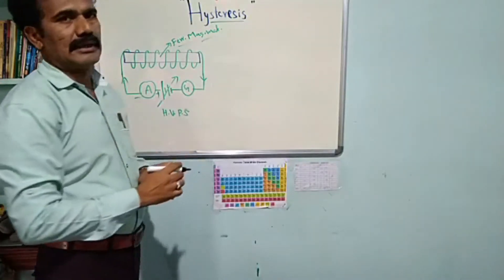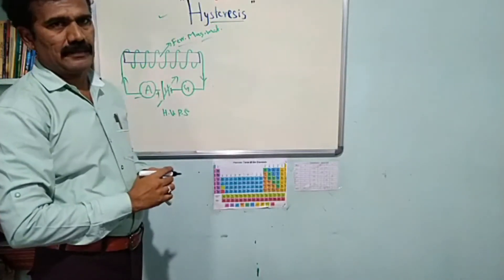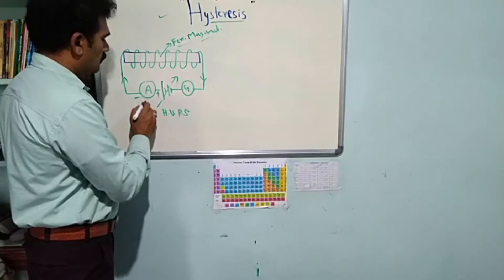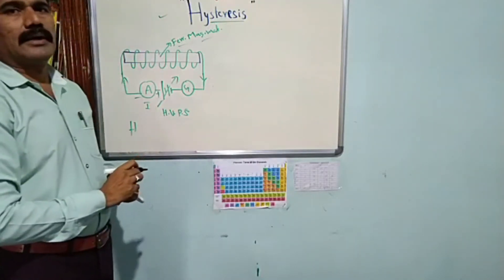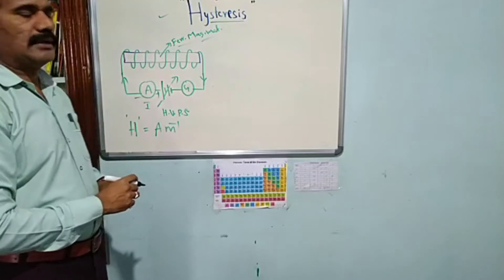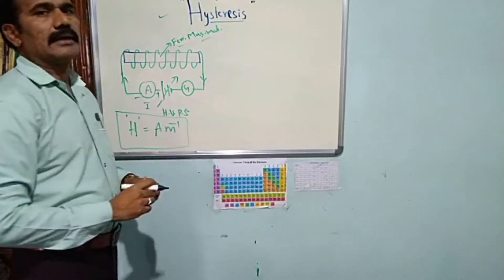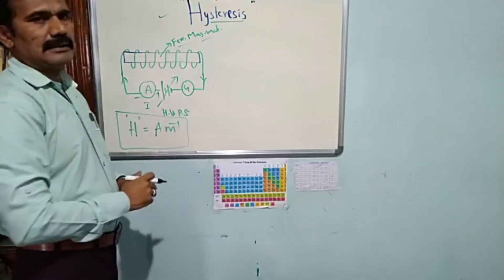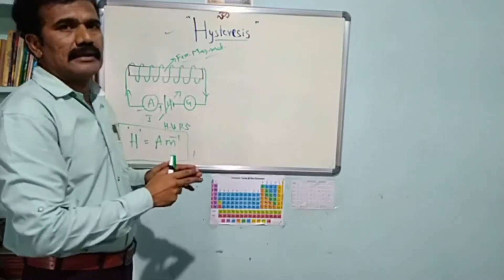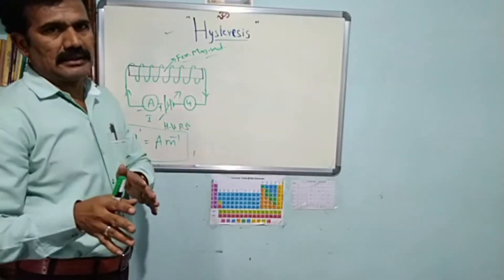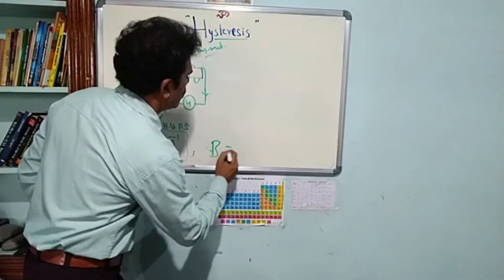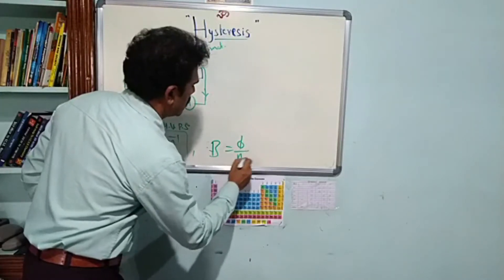In this experiment we can measure the current, and from the magnitude of the current we can calculate the applied magnetic field intensity H in units of ampere per meter. For this application of magnetic field intensity, the magnetization that takes place inside the ferromagnetic material is measured as magnetic flux density or magnetic induction B, which equals magnetic flux per unit area.